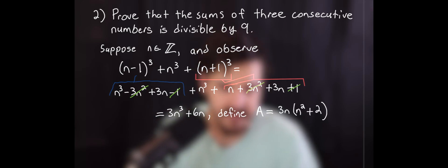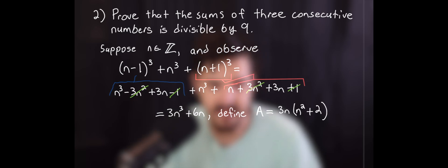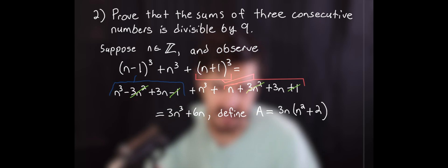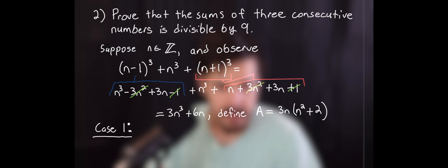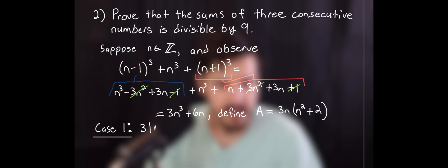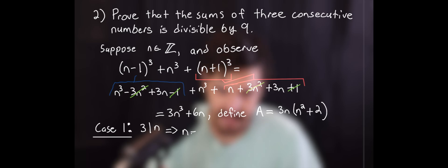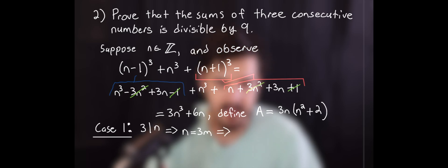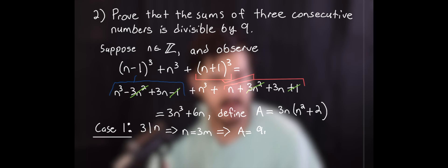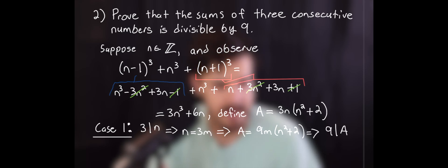Now from here we have two cases. The first case is if three divides n. From our definition of divisibility, if three divides n, we can write n as three times some integer m. Plugging that into our definition of a, we have that a equals nine times m times n squared plus two, which means that nine does divide a.